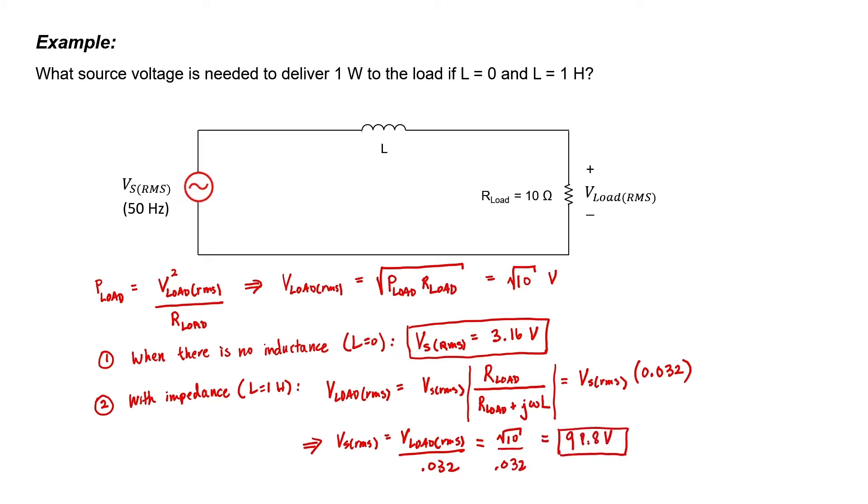This is a huge difference. The load resistor is receiving exactly the same amount of power in both situations. With the 1 Henry impedance along the line, the source voltage ended up being 98.8 volts — an astonishing difference from the situation without the inductor, where we only needed a source voltage of 3.16 volts. The load got the same 1 watt in both cases, but the source had to work a lot harder to deliver that power through the inductor. This is why having impedance in a load is usually not desirable.